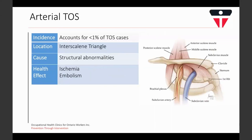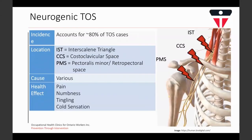Neurogenic TOS accounts for 80% of cases and occurs in all three sites: the interscalene, costoclavicular, and pectoralis minor. The causes vary and will be discussed in more detail. The main health effects are pain, numbness, tingling, and cold sensation. With neurogenic TOS, the symptoms can range from the neck and shoulder to the forearm and the hand, depending on where the impingement is actually occurring.